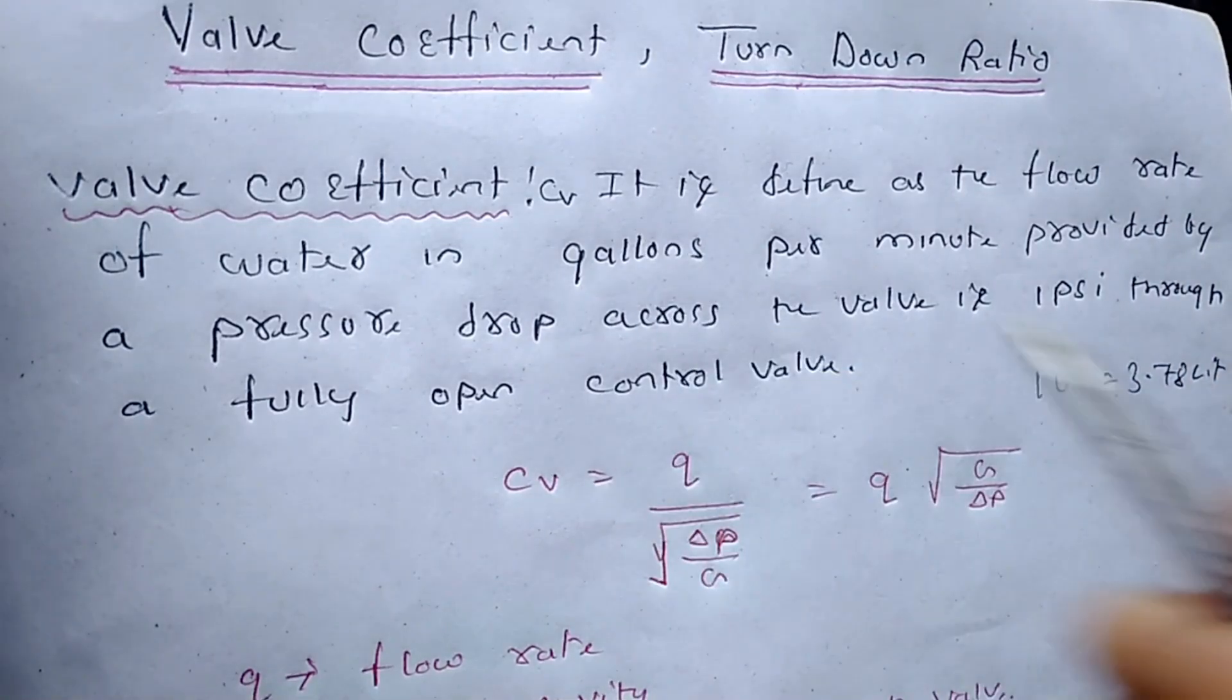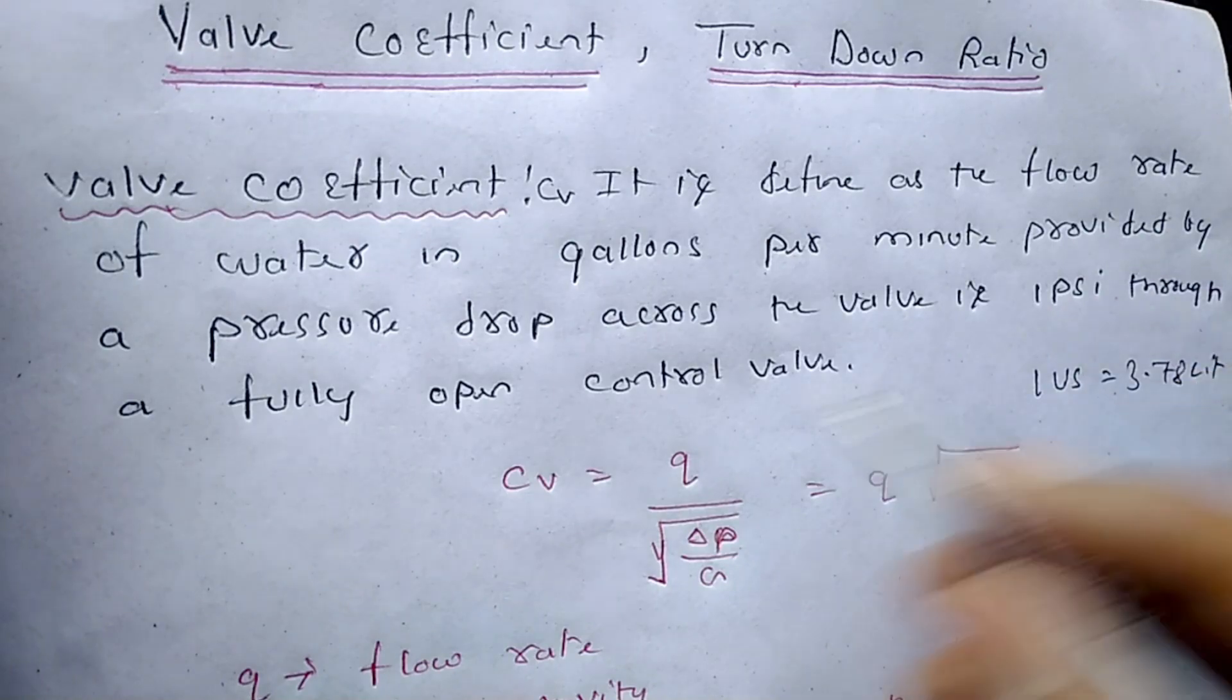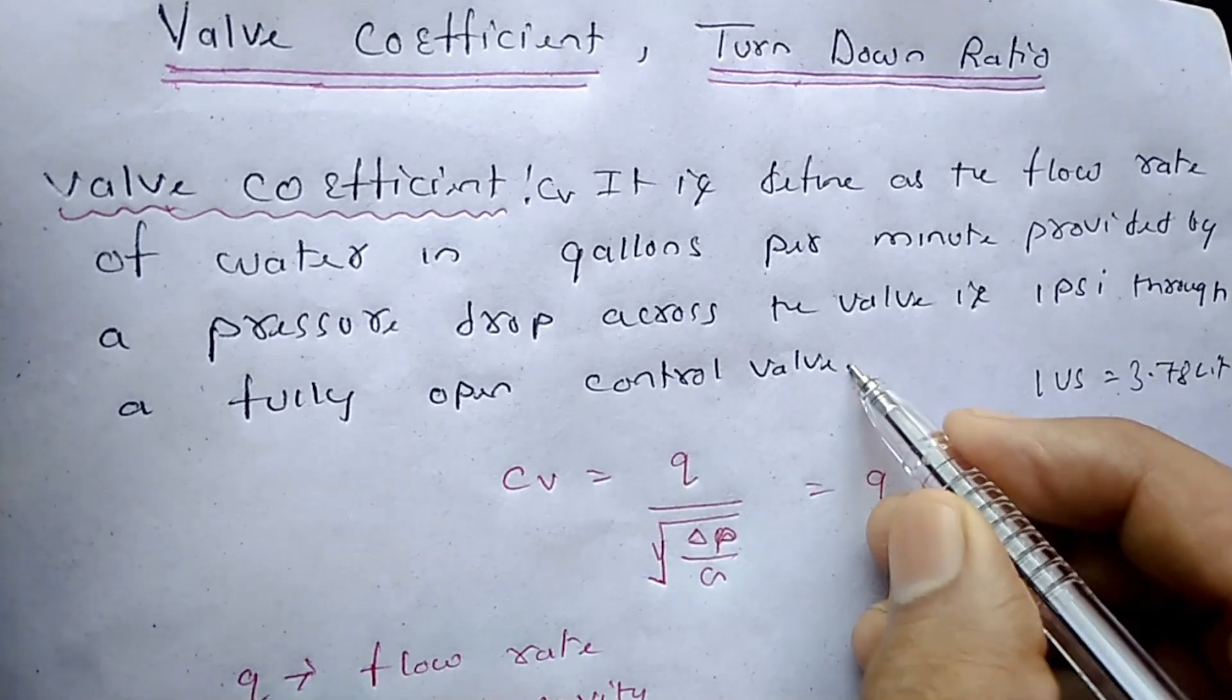So let's go to the definition. It is defined as the flow rate of water in gallons per minute provided by a pressure drop across the valve of 1 psi through a fully open control valve.